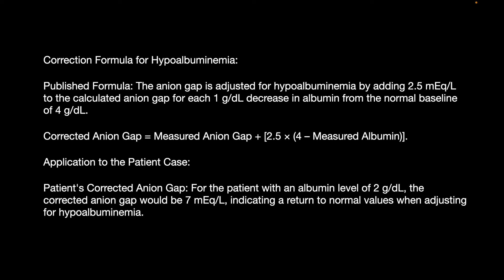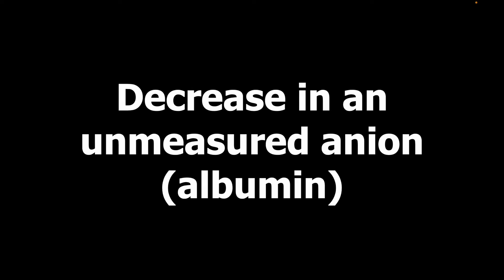When you get a low or normal anion gap, the first step is to correct for albumin. A decrease in unmeasured anions — specifically albumin — is one of the key causes of low anion gap.